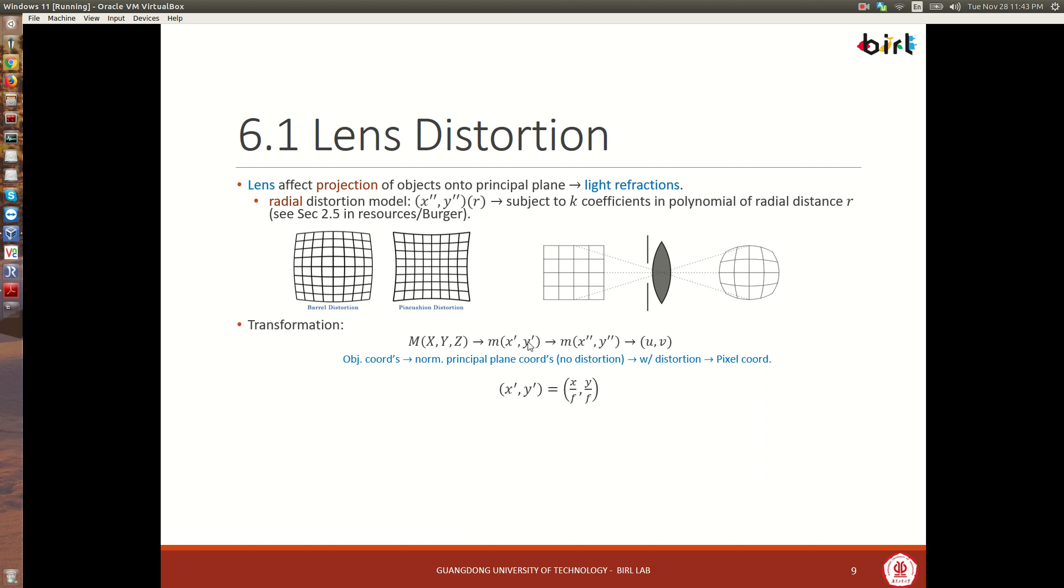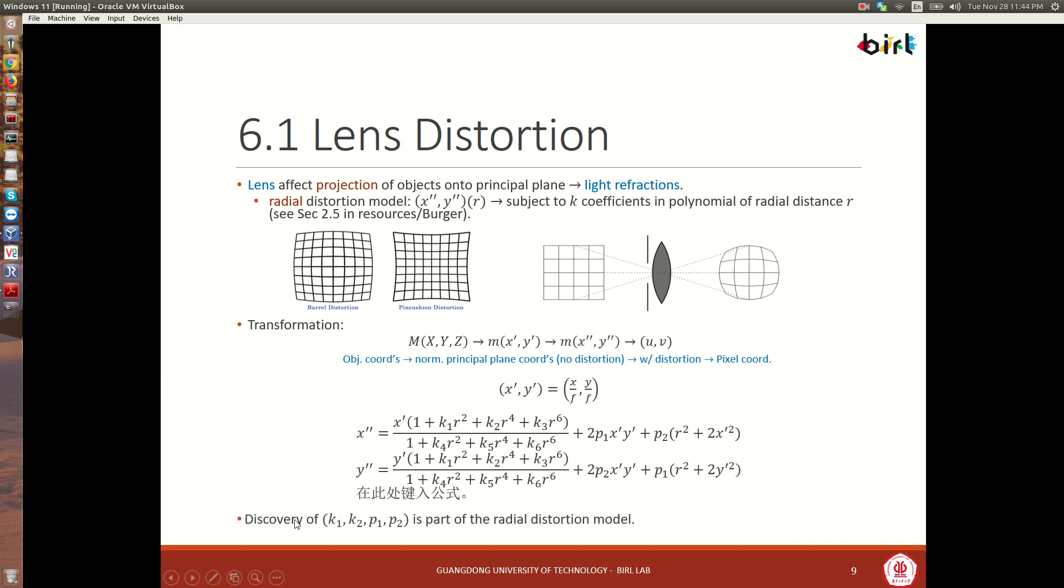So here, for this normal principal plane coordinates, we can think of x prime and y prime as this x over f and y over f coordinates. And then to get x double prime with the distortion and y double prime, we see that this x coordinate is modified by this polynomial equation right here on the numerator and the denominator. Now this r to the 6 will make the contribution of k3 and k6 really, really small to the point that they're negligible. So mostly we'll be concerned with these parameters, k1, k2, k4, k5. We'll see how that looks in ROS a little bit later. And we'll have the same thing for y double prime. And so we'll have the discovery of these coefficients and some projection parameters for the distortion model.